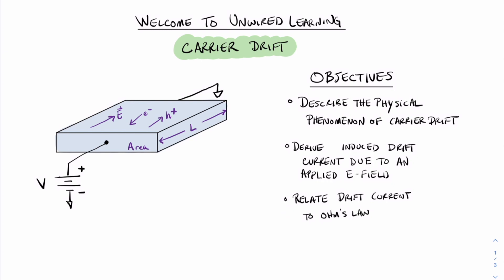Over here on the left, we have a picture of a piece of semiconductor, and what we've done is we've attached a voltage to it. When we attach a voltage, that generates an electric field in this device. Because there's a positive potential on one side and a negative potential on the other, the electrons will be attracted to that positive side and will drift towards it. Holes, oppositely, will drift towards the negative side. We'll define the area as A and the length of this device as L.